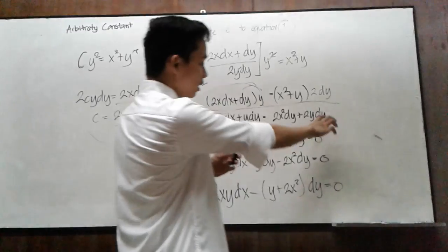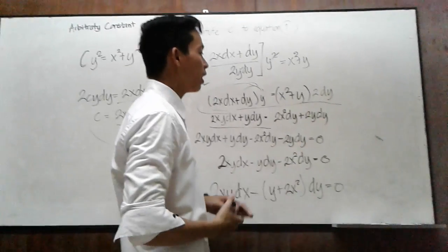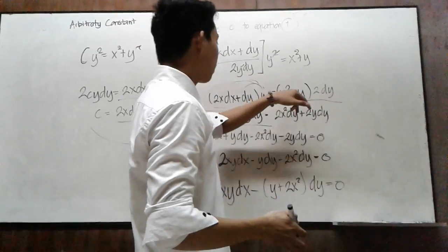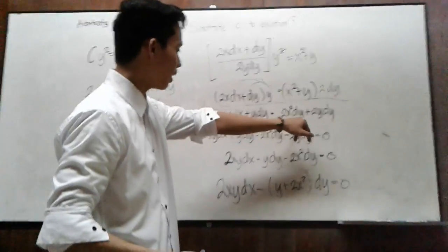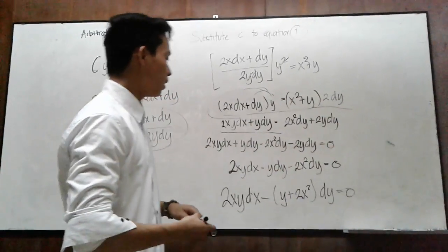On the other side, simply multiply 2y dy by x squared plus y. So the answer is 2x squared dy plus 2y dy.